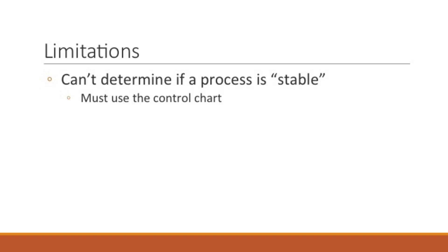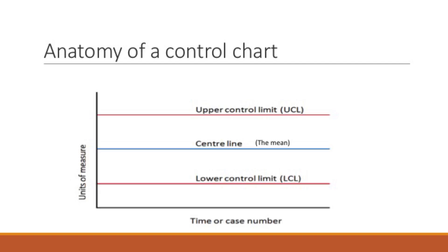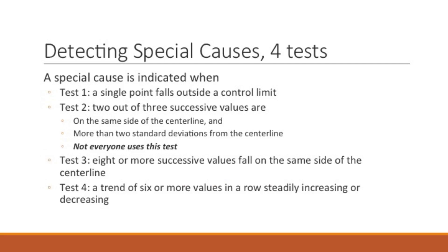Here's the anatomy of a control chart. It's similar to a run chart in that we have the units of measure on the x-axis and the time or case number on the y-axis. We have a center line — this time we use the mean, not the median. We also apply an upper control limit and a lower control limit, and these limits are calculated from the data. In a control chart there are four tests for detecting special causes.